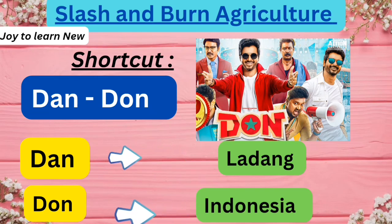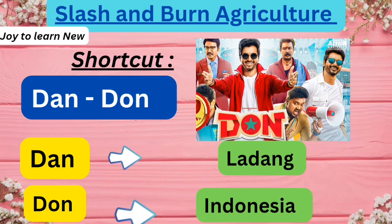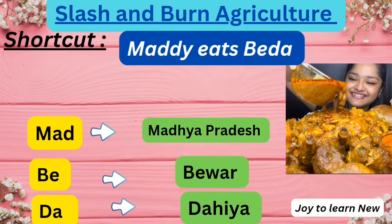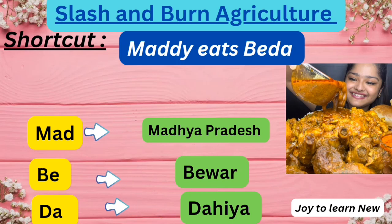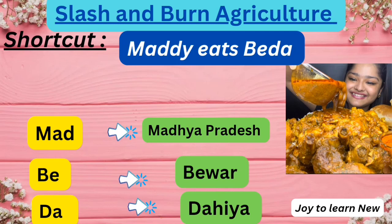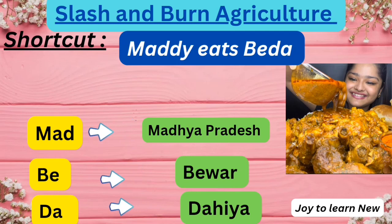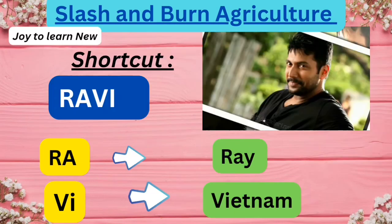The next shortcut is 'Maddie eats Bida.' Maddie refers to Madhya Pradesh, Be refers to Bewar, and Da refers to Dahia. So Bewar and Dahia are names for slash and burn agriculture in Madhya Pradesh.